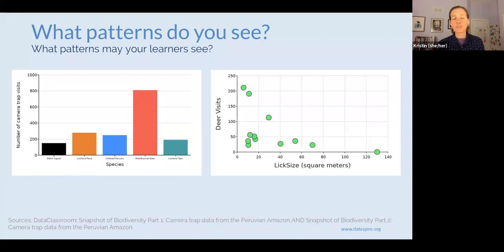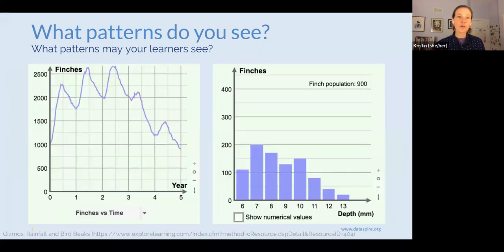Just to start off, you can pause the video and take a look at these two different graphs. These are from a data classroom activity, but really you could fill in any graph. What patterns do you see across these graphs? I know full well that you have no idea what these data are about, but what patterns do you see? What patterns may your learners see in these data? You can choose these two graphs or these two graphs from a gizmo simulation. Stop the video and take a few seconds to think about what you see and what your learner may see in terms of patterns in the data.